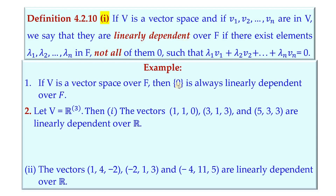A simple example is the zero vector. The zero vector is linearly dependent, or the singleton set {0} is a linearly dependent set, because if we consider α·0, without α being zero we still get α times the zero vector equal to zero. So the singleton {0} is a linearly dependent set.